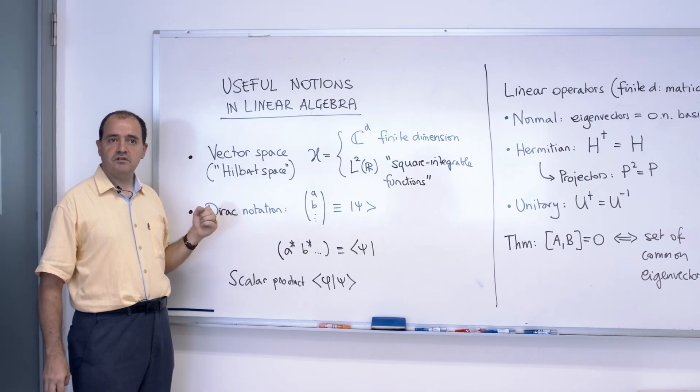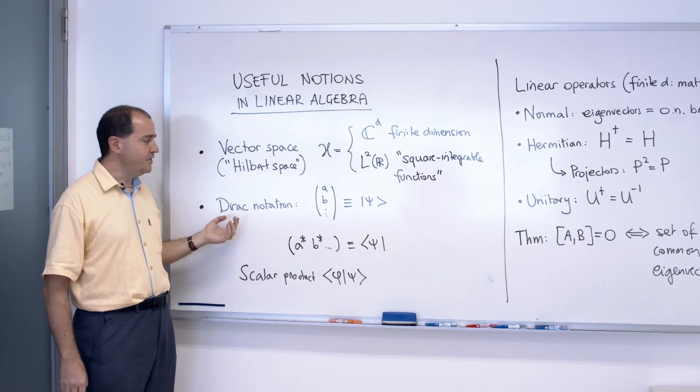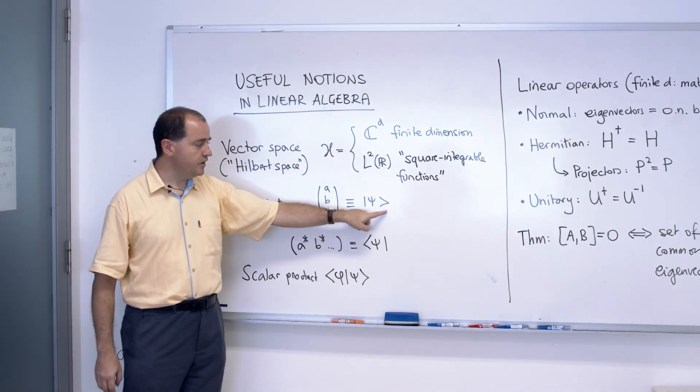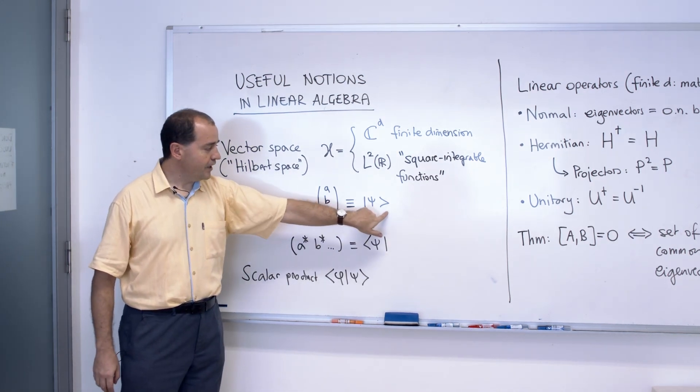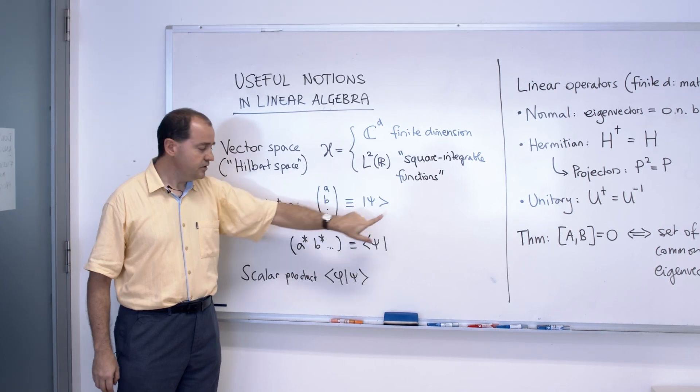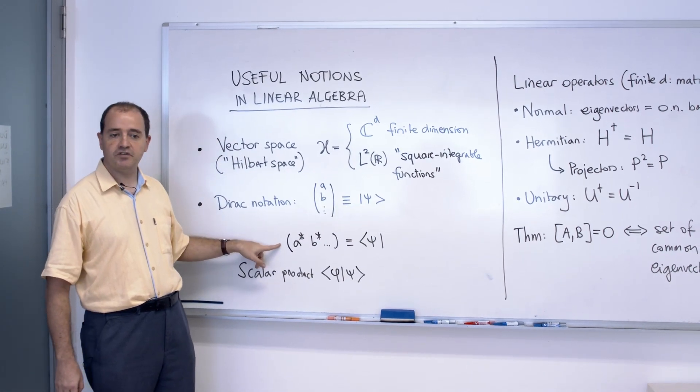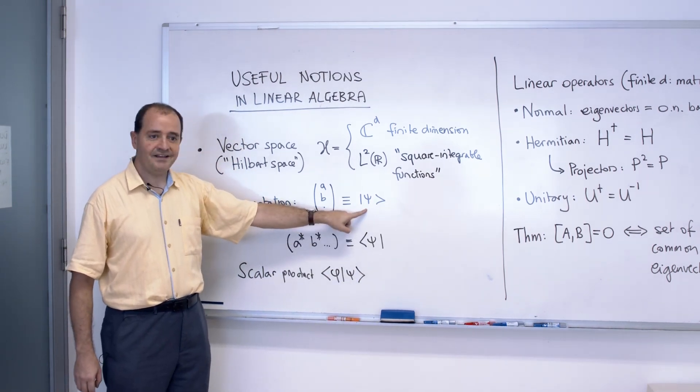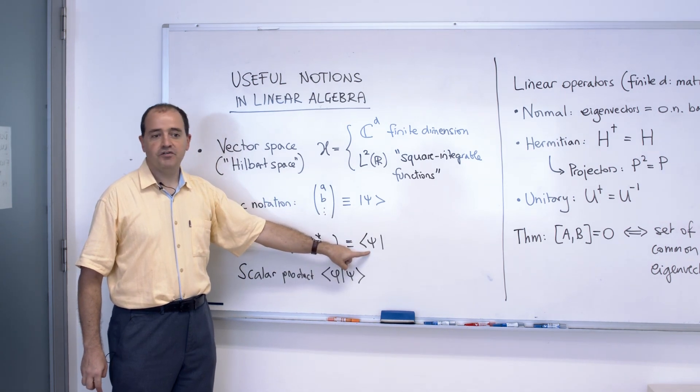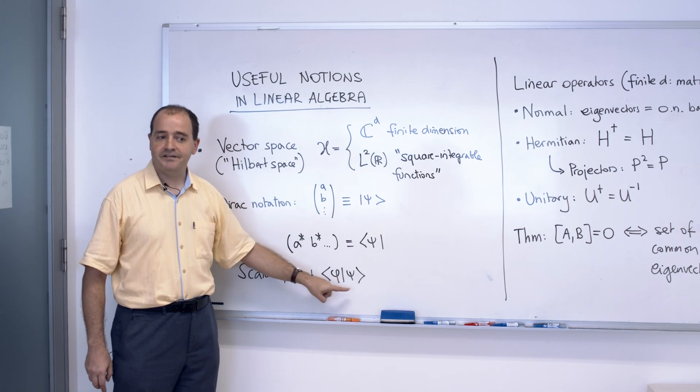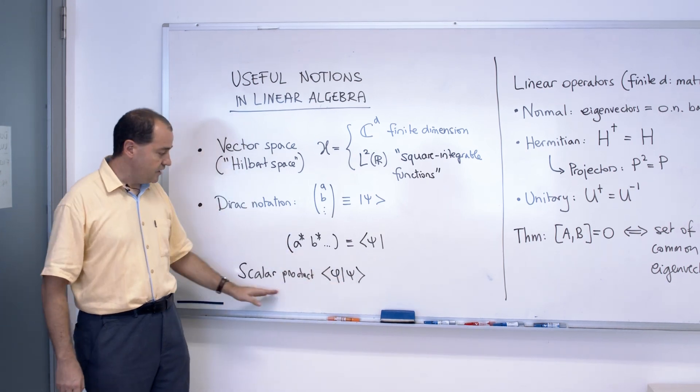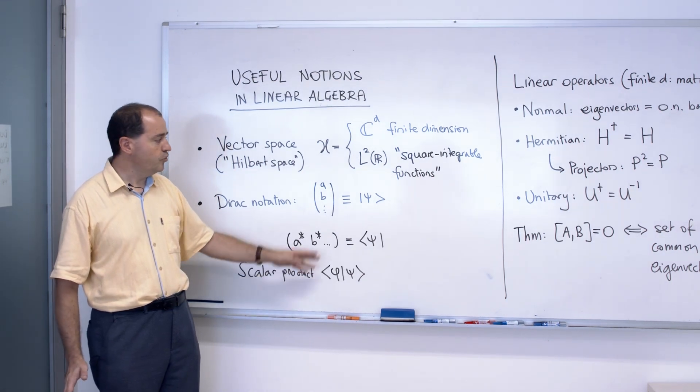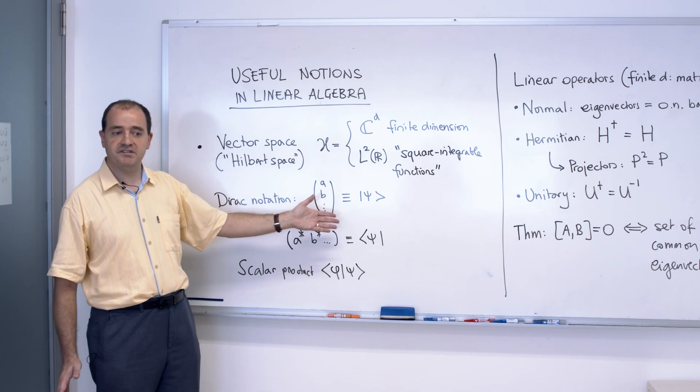We are going to use the Dirac notation for the vectors, which means that a column vector, these are complex numbers, a column vector will be represented in this way, with this kind of brackets around, and the corresponding transpose and conjugate vector will be represented in this way. This object is called a ket, and this is called a bra, for the stupid reason that the scalar product is a bracket. And that's how we are going to write all the time the scalar product. Really there's nothing mysterious in the Dirac notation. We could use another one, but it has become standard, and you have to learn it.